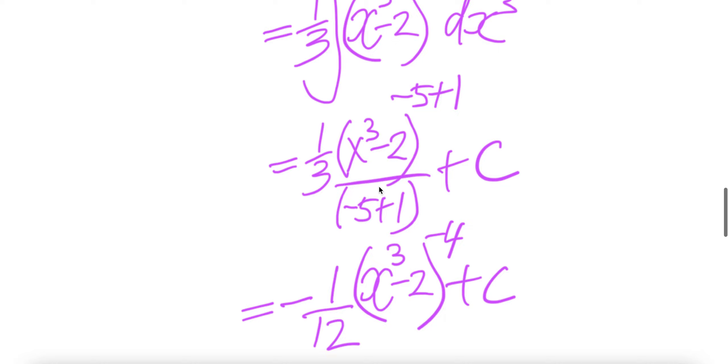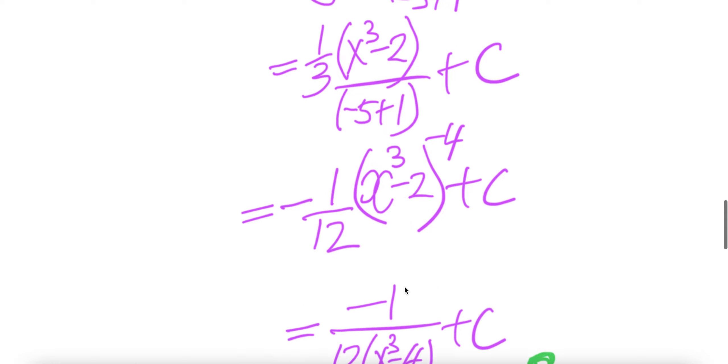Negative 5 plus 1 is negative 4, up here and down here. Negative 4 times 3 is negative 12. (x³-2) to the power of negative 4.